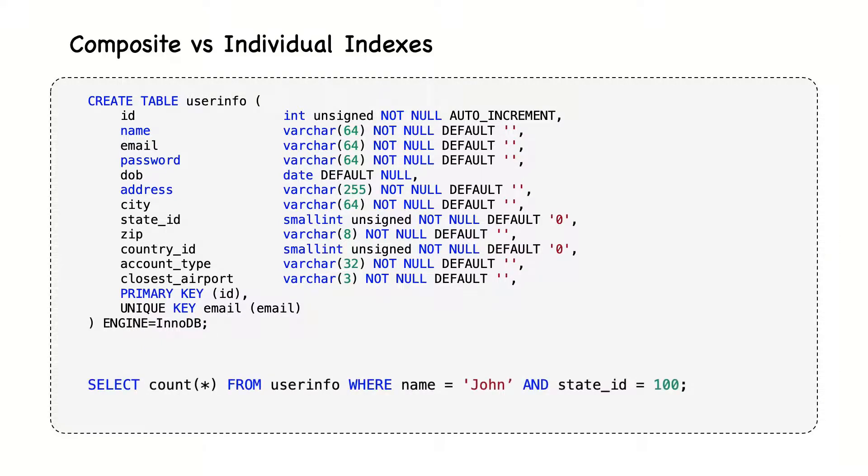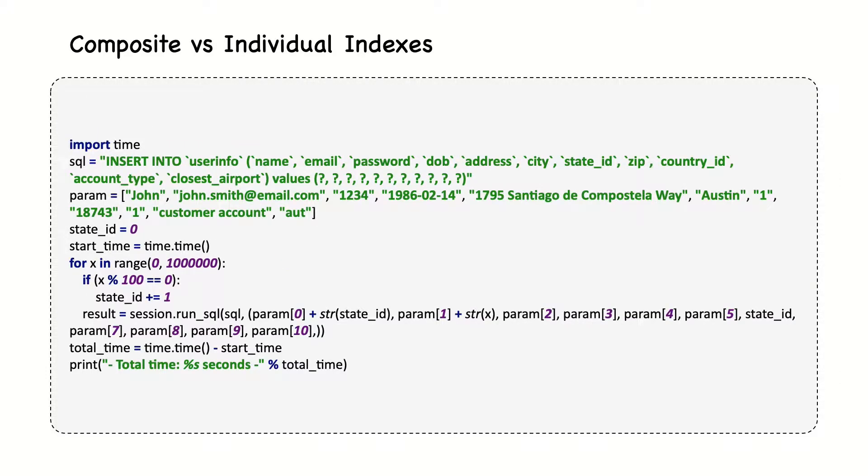Then, we want to query this table using the name and the state ID columns. But first, we need to create and populate this table. For this, we'll use a small Python script, which will insert the given number of rows in the table. In this case, one million rows. Please note that we'll apply this static insert clause. However, to make things more interesting, we'll increment the values for name and state ID columns. Furthermore, we want to add indexes on these columns, and it wouldn't make any sense to create an index on static values.